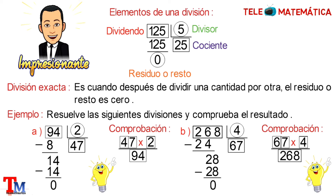A manera de conclusión, podemos decir que como el valor del residuo o resto en ambas divisiones es 0, entonces las divisiones son exactas. Espero que hayas comprendido el tema. Y hasta aquí nuestro video sobre divisiones de números naturales con una cifra en el divisor, como parte del curso de los números naturales. Espero que el video te haya ayudado.